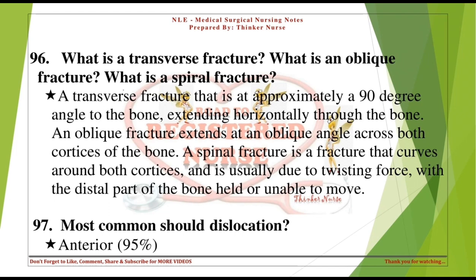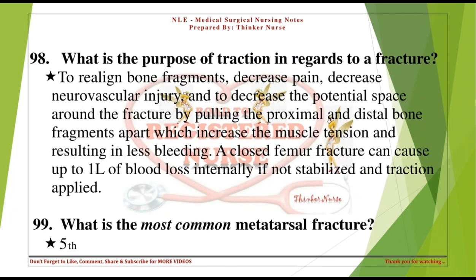What is the most common shoulder dislocation? Anterior, 95%. What is the purpose of traction in regards to a fracture? To realign bone fragments, decrease pain, decrease neurovascular injury, and decrease the potential space around the fracture by pulling proximal and distal bone fragments apart, which increases muscle tension and results in less bleeding.